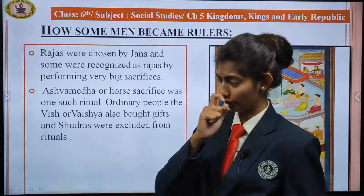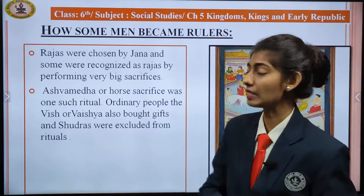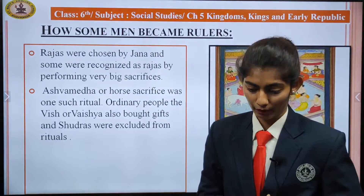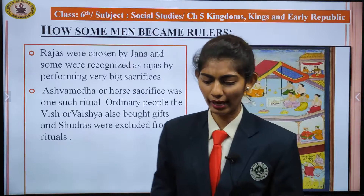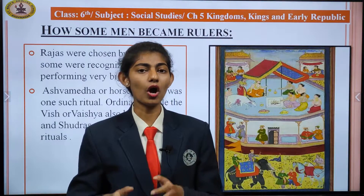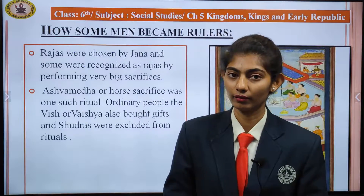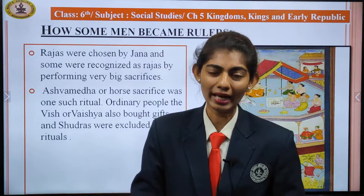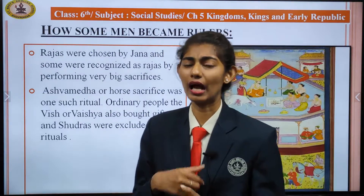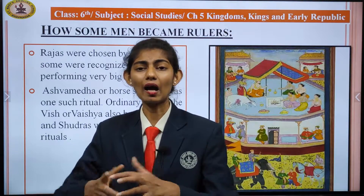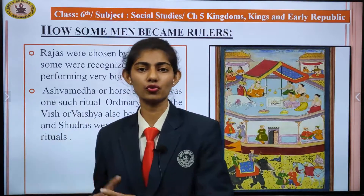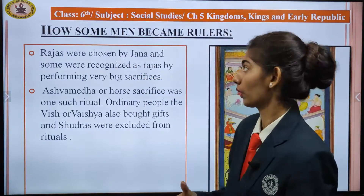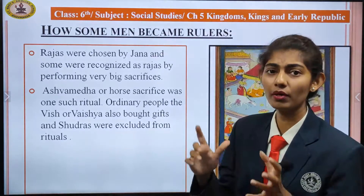The first topic of the chapter is: how some men became rulers. While choosing leaders or rulers by voting has become common nowadays, in previous times it was different — how did people become rulers in the past?